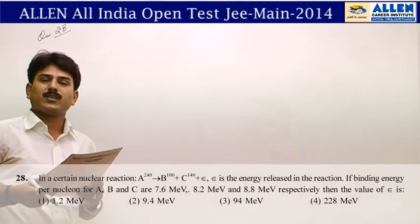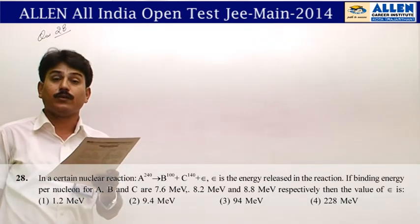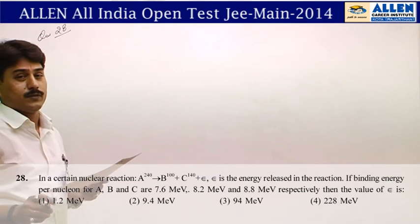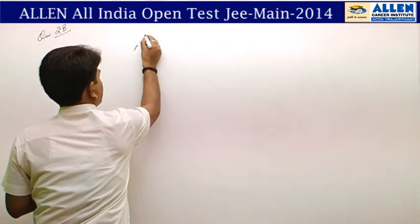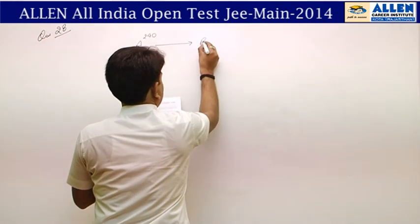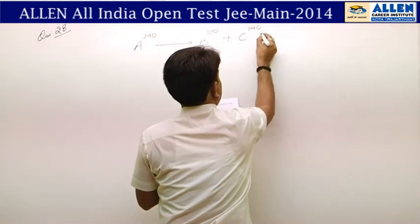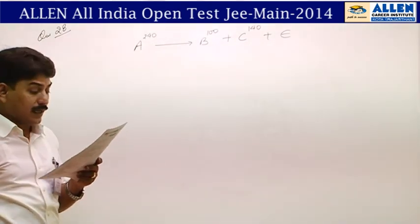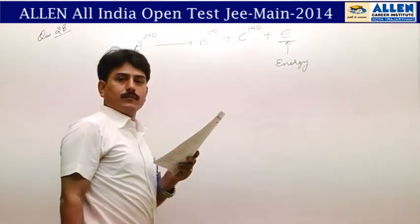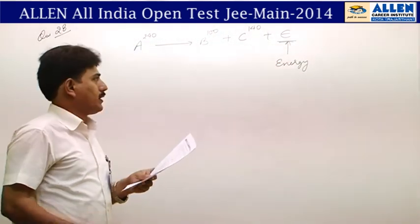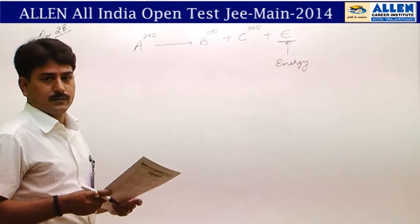Question 28 is from nuclear physics — radioactivity. Please be careful: in a certain nuclear reaction, A²⁴⁰ → B¹⁰⁰ + C¹⁴⁰ + ε, where ε is the energy released. When energy is given in an equation, there are two methods: either masses are given or binding energies are given. Here, binding energy per nucleon is given.